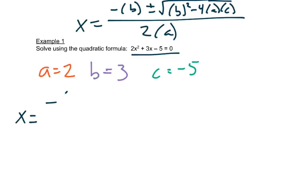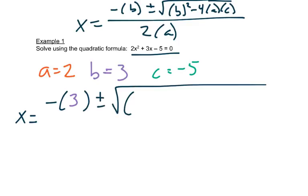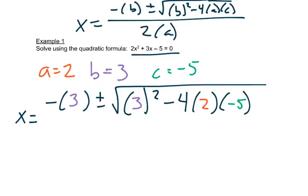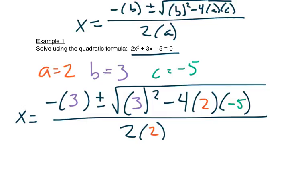So I'm going to write x equals the opposite of b — putting that 3 in place of b — plus or minus the square root of b squared, putting that 3 in place of b squared, minus 4 times a in that parenthesis, and then c in the next parenthesis, all over 2 times a in the bottom parenthesis. Type it into your calculator just like you see it.